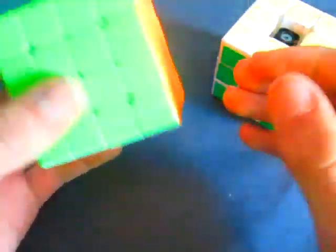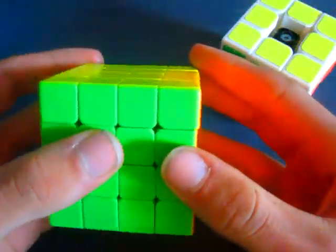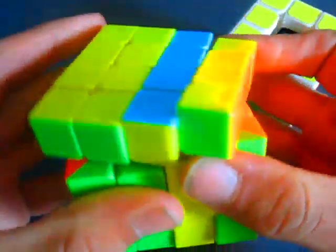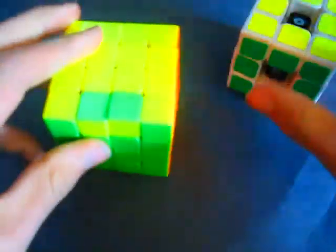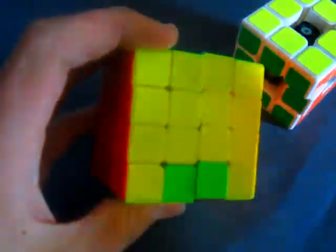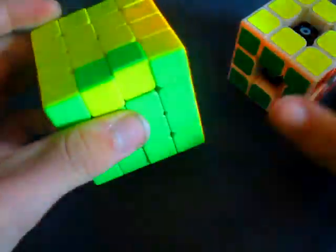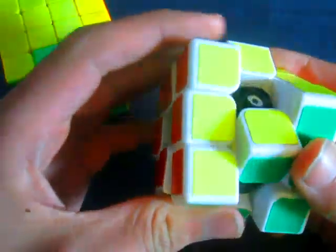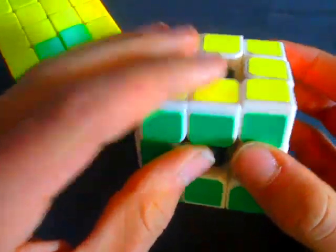So I'm going to show you possible parity cases you can get on a 4x4. The first is OLL parity where two edges are flipped and they're supposed to be on the opposite side. That is actually not possible on this 3x3 either.